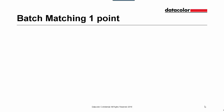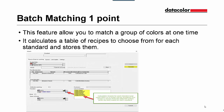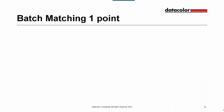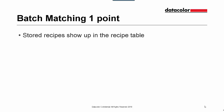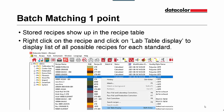Now we will take a look at batch matching, which is worth one feature point. This feature allows you to match a group of colors at one time. It calculates a table of recipes to choose from for each standard and stores them. Stored recipes show up in the recipe table. Right click on the recipe and click on lab display to display a list of all possible recipes for each standard, and then you can save.